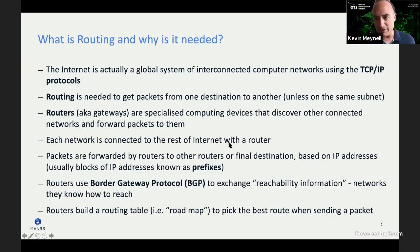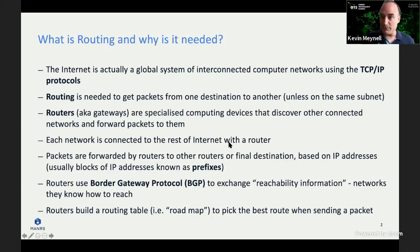Each network is connected to the rest of the internet with a router, and routers forward packets to other routers and onward to the final destination based on IP address — actually blocks of IP addresses. If you're old enough, you'd remember class C, class B, and class A, but of course it's all classless inter-domain routing (CIDR) these days. To exchange reachability information between themselves, routers use something called Border Gateway Protocol or BGP, from which they build a routing table — the road map of the internet.